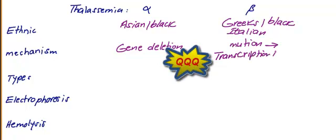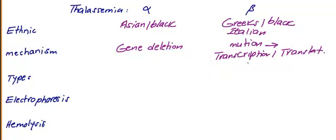Types: here you have mild to severe according to how many genes are deleted. Here you have also the same - mild to severe - so it is almost the same.